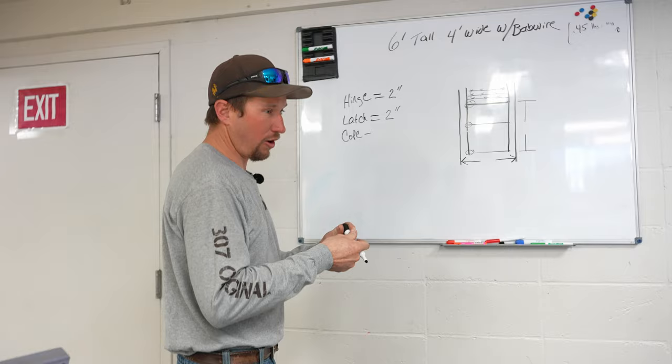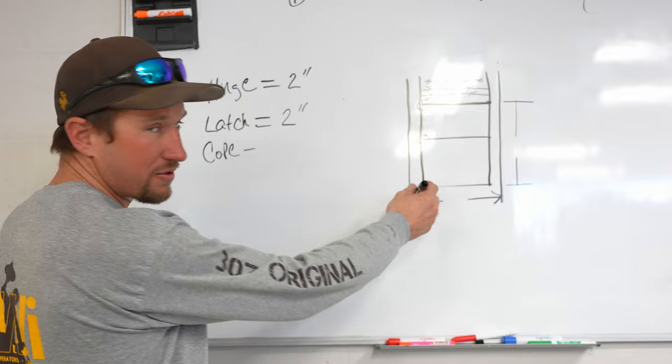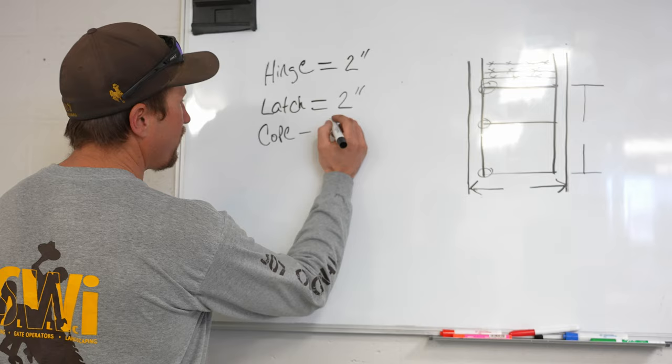All right, so now our cope. What is our cope? Our cope is going to be on the horizontal pipe that meets up to the vertical pipe. We have to cope that piece of pipe so it sits together nice, also known as a saddle. So that cope is going to be three-eighths of an inch.